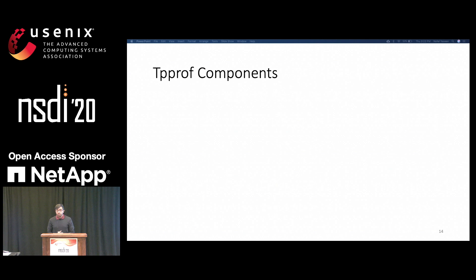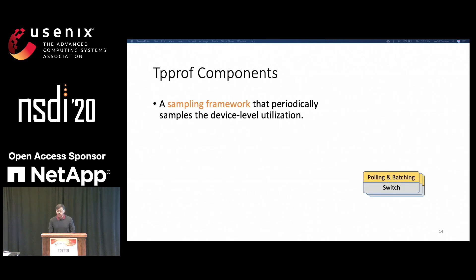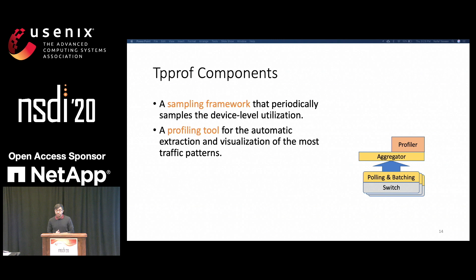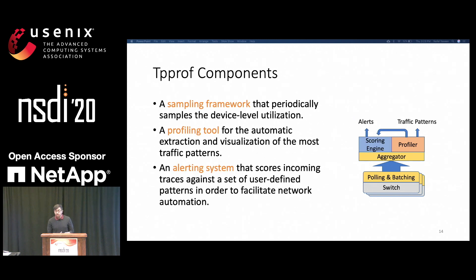Now let's talk about the design. There are three major components in the TP-Prof design. First is the sampling framework, which collects the data from the switches—all data is then collected at a central aggregator. The second component is the profiler for automatic extraction and visualization of the most common states and subsequences in the captured data. The final component is an alerting system which relies on a scoring engine that scores the incoming stream of data against user-defined signatures in order to facilitate network automation.